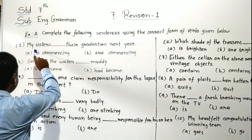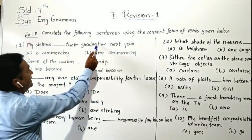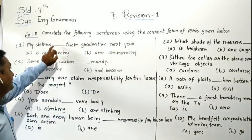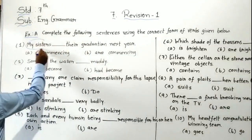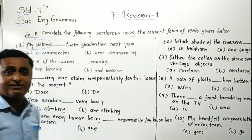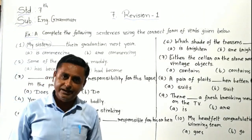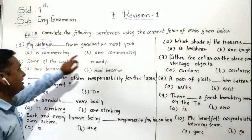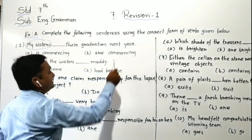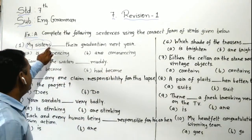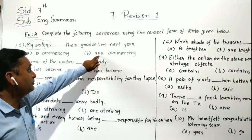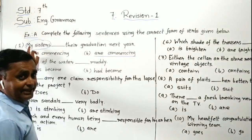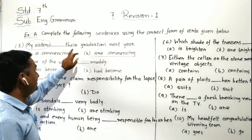The first blank is given here: 'My sisters, blank, their resolution next year.' Here, 'my sisters' is given. We are not talking about a single sister — we are talking about more than one sister because 'sisters' is in plural form. So which is the correct answer here? Since it is plural form, we have to use the plural verb. 'Are' is plural here. So the correct answer is 'are.' The finalized sentence becomes: my sisters are commencing their resolution next year.